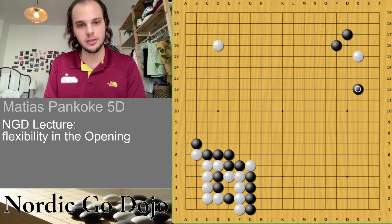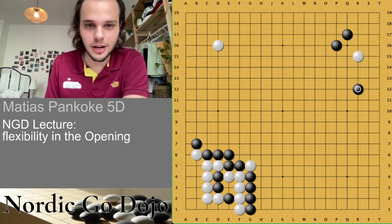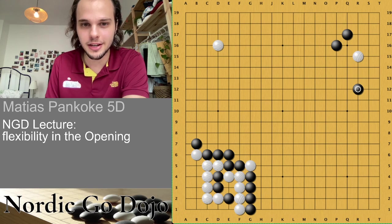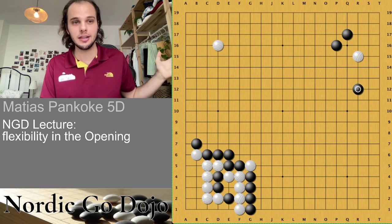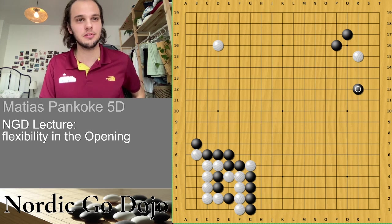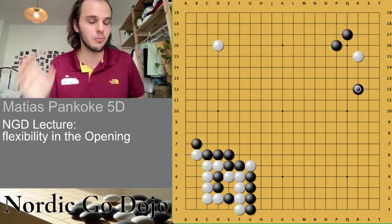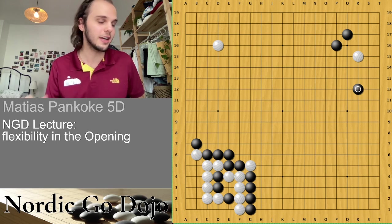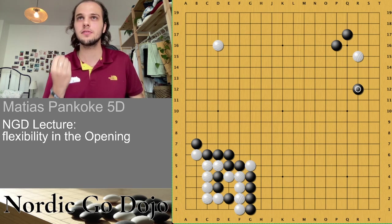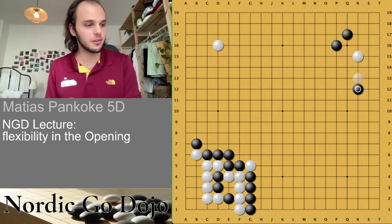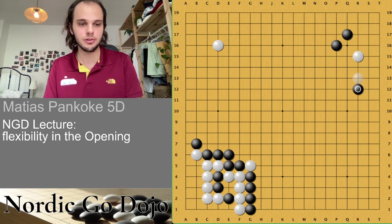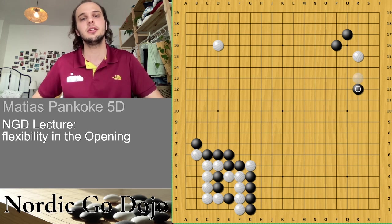Someone mentions: like in chess where an opponent is more prepared in some line of a certain opening and blitzes it out. Yes, that is the perfect example. In chess this is even more the case, but in Go we actually have this flexibility — we don't have to fall for these prepared variations. That's also a very important reason why we need flexibility.